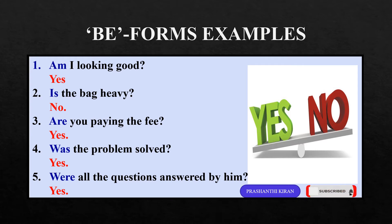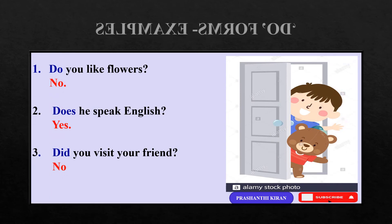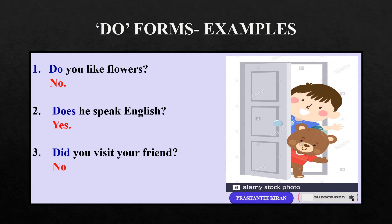In these questions, am, is, are, was, were are the auxiliary verbs used as questions. Let us learn the do forms used as question words. Do you like flowers? Does he speak English? Did you visit your friend? In these three questions, do, does, did are the auxiliary verbs used for questioning, and they are placed in the beginning of the sentence.